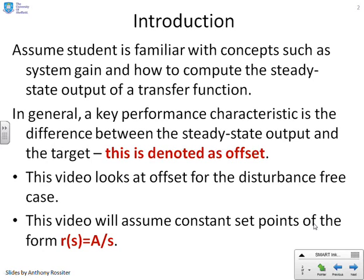In general, a key performance characteristic of a closed loop is the difference between the steady state output and the steady state target, and this is called offset. What you can argue very easily is that if you have a target to the loop, then usually that's where you want the output to settle, and therefore in general you want the offset to be zero.